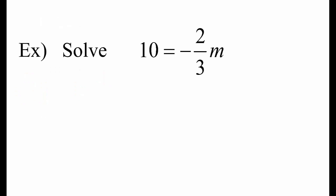Here's an equation with a fraction in it. No need to panic, though. Let's think of it as a division problem. I'm going to rewrite it as 10 equals negative 2m over 3.